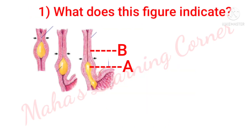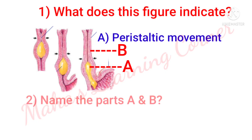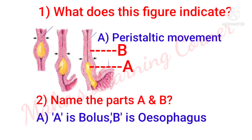What does this figure indicate? This figure indicates peristaltic movements. Name the parts A and B. Answer: A is bolus, B is esophagus. The food chewed in the mouth is called bolus, and the esophagus is the food pipe. The bolus moves through the esophagus via peristaltic movements.